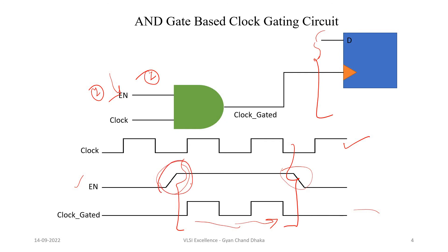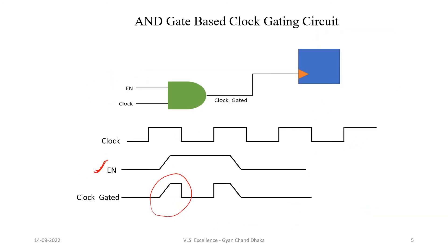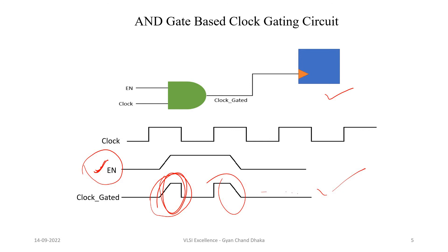Now let's see what is the issue with this AND gate based clock gating circuit. If the enable signal toggles when the clock signal is high, it might cause glitches in the output gated clock. The clock signal should be a perfect square wave — there should not be any glitches. If we use an AND gate based clock gating circuit, we have to make sure that our enable signal is toggling only when the clock signal is low. You can pause the video for one minute and think about any circuits which will make sure that the enable signal only toggles when the clock signal is low. Please write down the solution in the comment section.